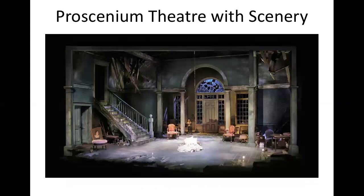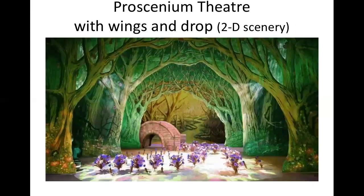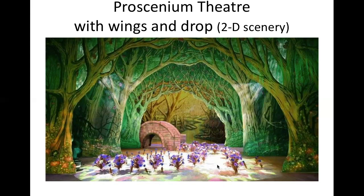Scenery for prosceniums tends to be fairly large and picturesque. As you can see in this example, big box sets — that's a term that gets used quite often. Or here, this is an older tradition though it looks fairly contemporary. What you have here are painted drops, cut drops, and the way they all come together gives it a sort of three-dimensional quality. And then there's a backdrop in the back, so you get something called wing and drop.